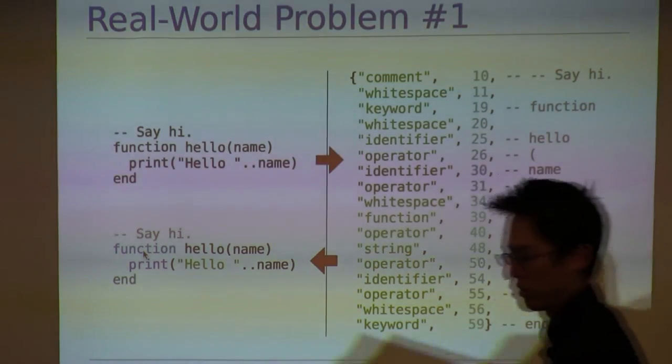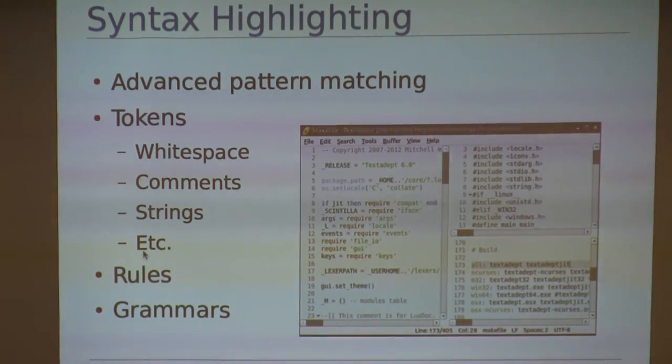Alright, so what are we going to do? We can see that syntax highlighting is really just an advanced form of pattern matching. We can break up source code into a series of tokens, like white space, comments, keywords, strings, and so on. And we can combine these tokens into rules that describe the bits and pieces of the language. And together, these rules constitute the language's grammar, which is the formal description of the language. Now, note, I'm using the term grammar here a little bit loosely. LPEG uses it slightly differently, but the idea is the same.